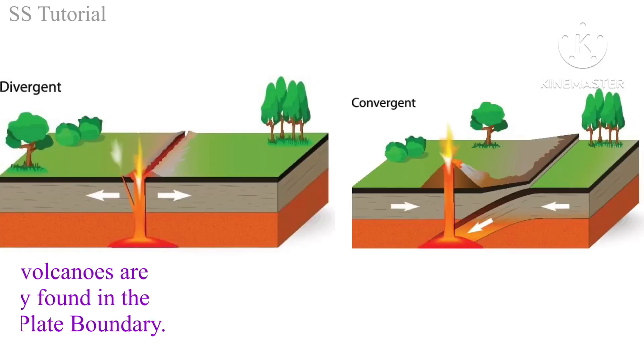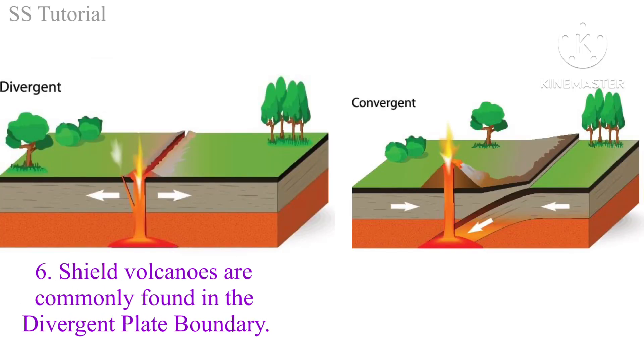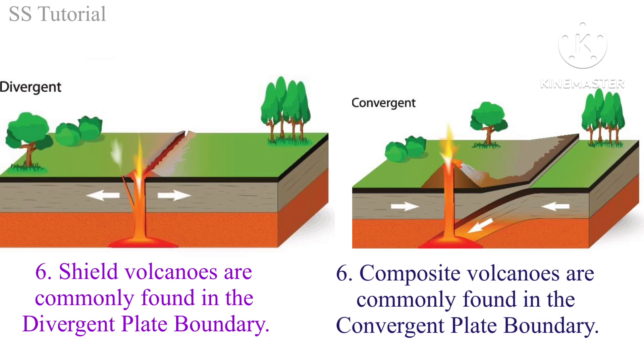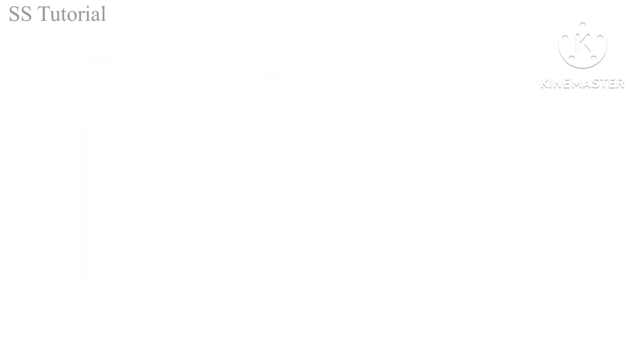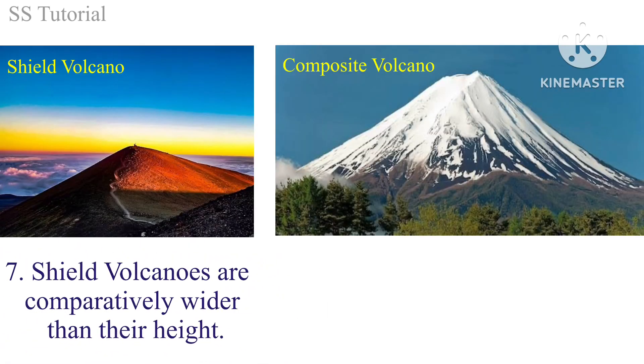Shield volcanoes are commonly found at the divergent plate boundary, or in the constructive plate margin. Whereas composite volcanoes are commonly found at the convergent plate boundary.